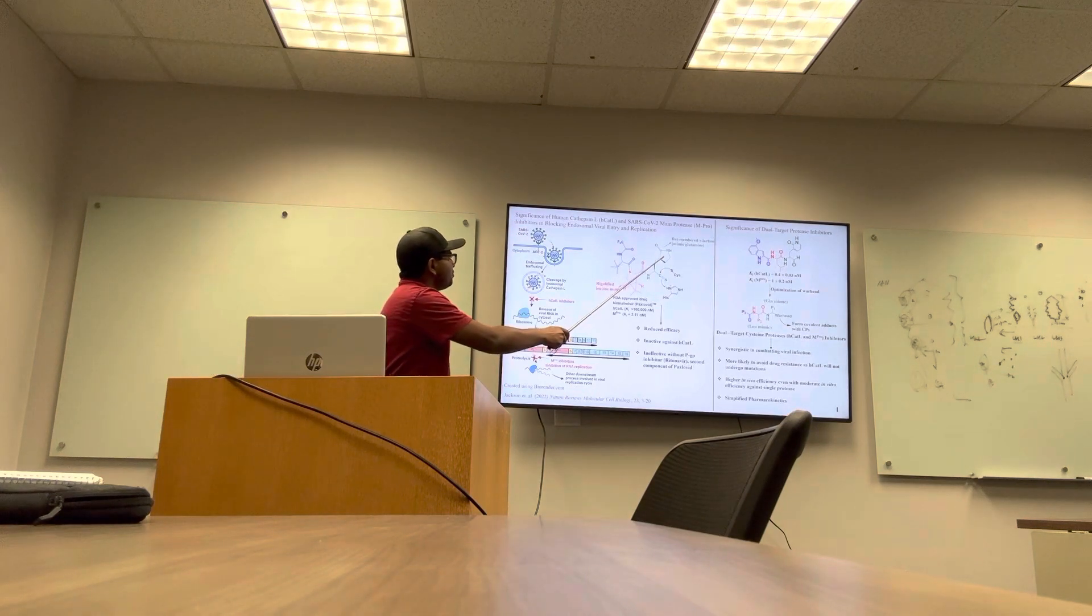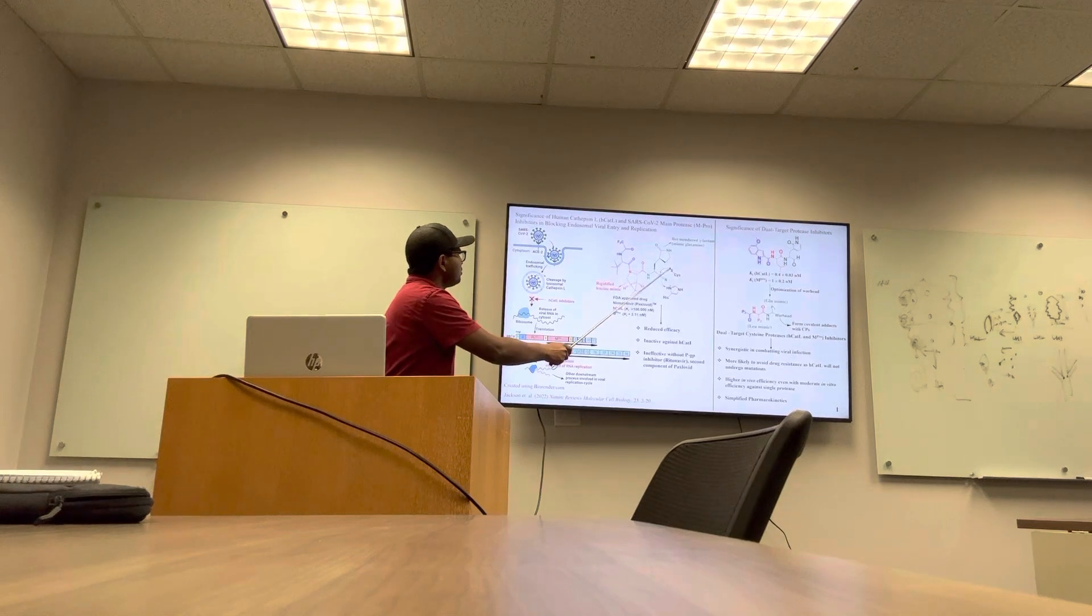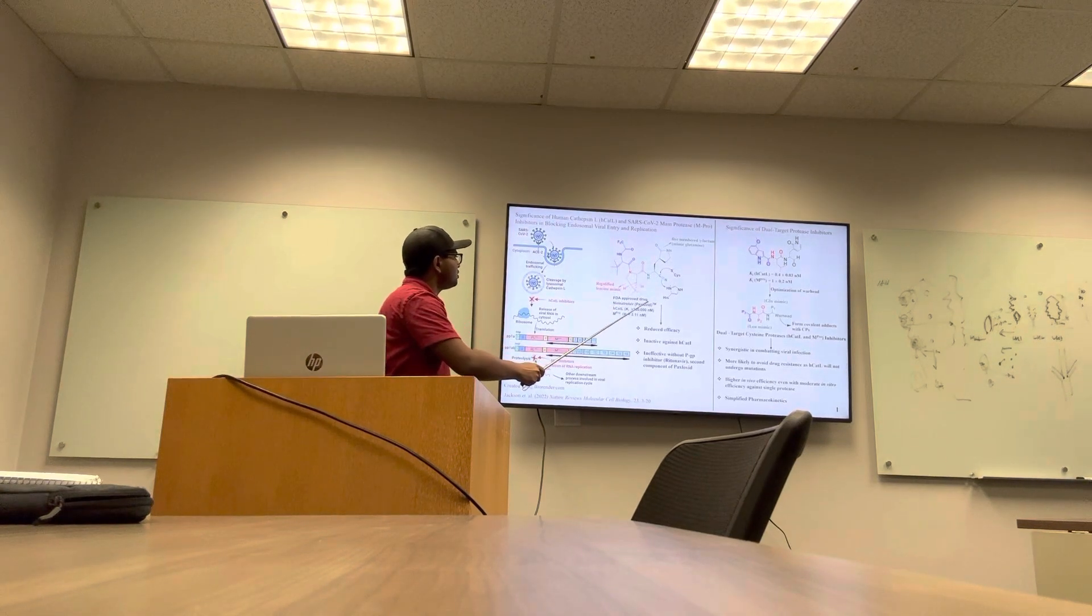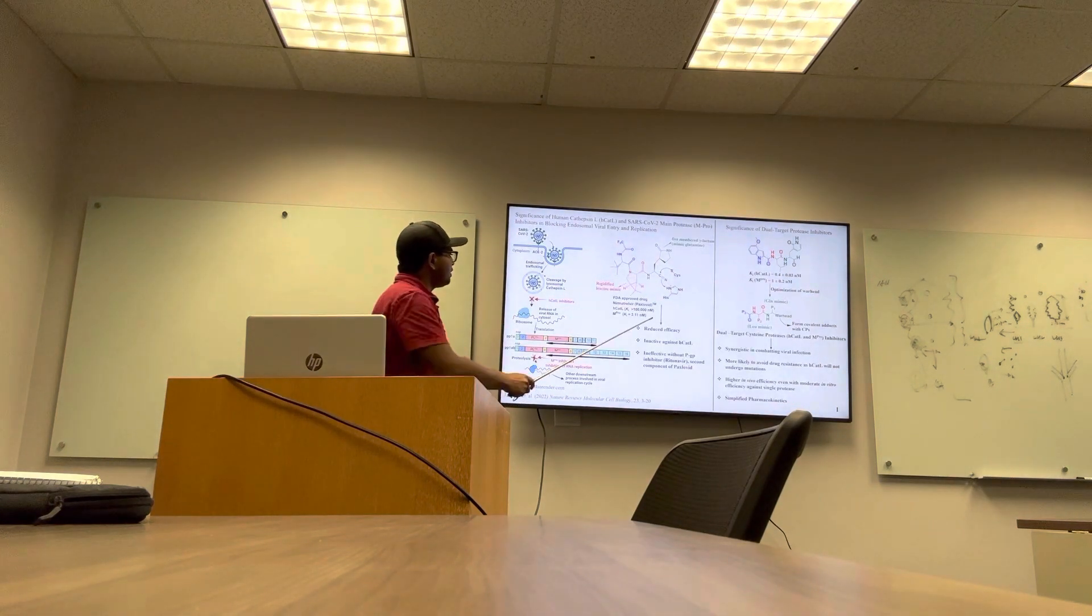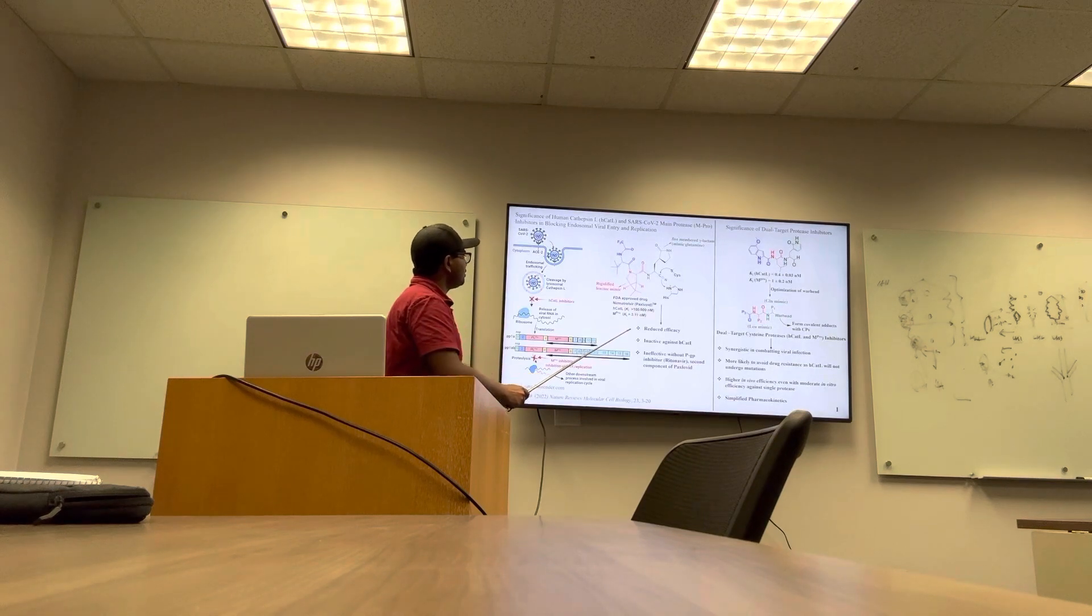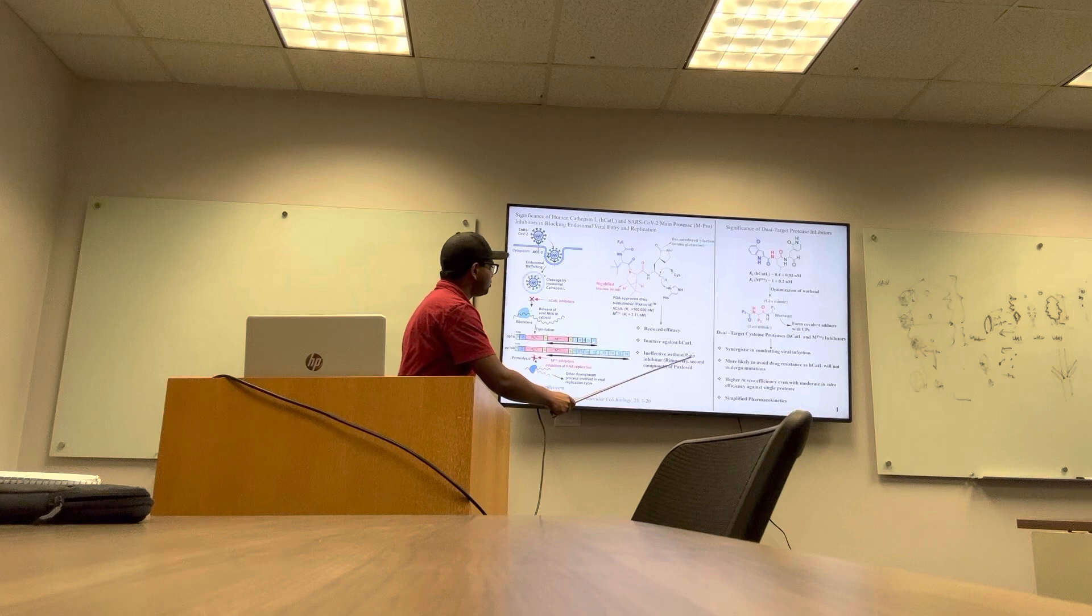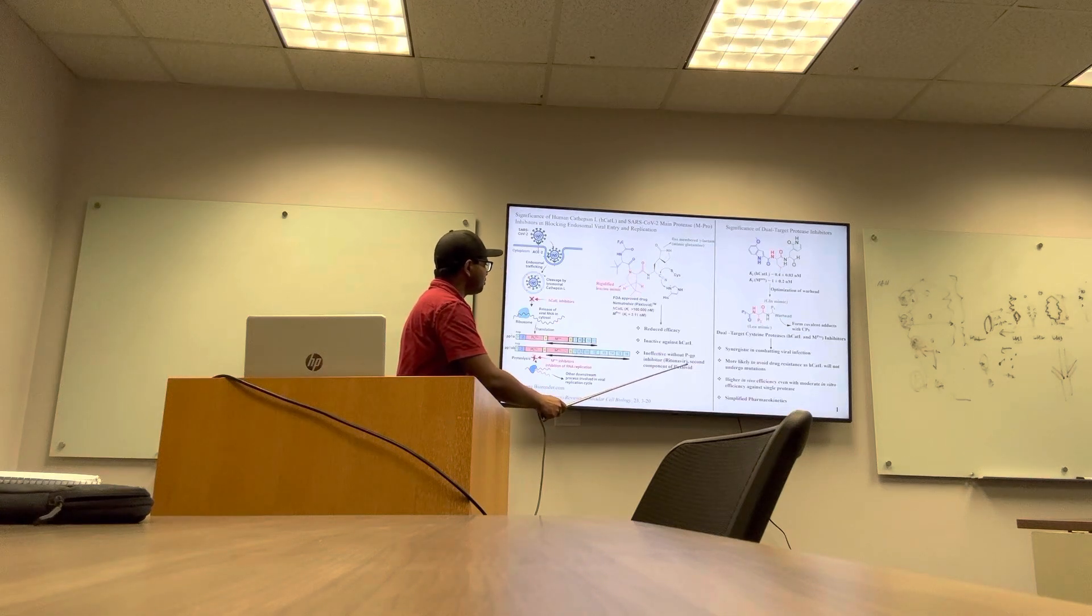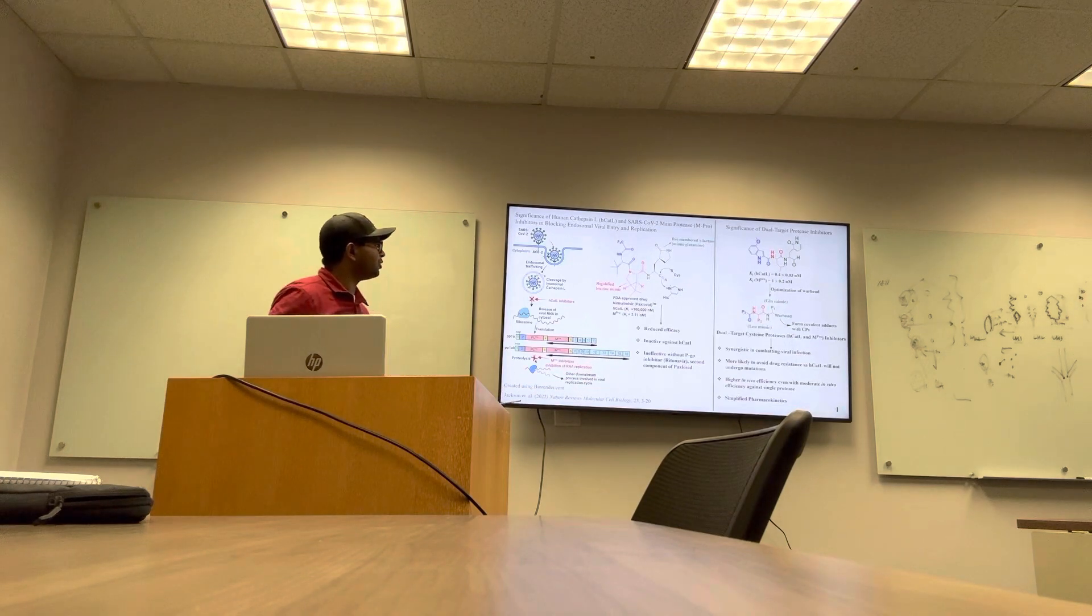The efficacy of current FDA-approved drug Nirmatrelvir, which is a reversible covalent inhibitor of main protease, is reduced with the arrival of new mutations, with further mutations expected to diminish its potency even more. It is inactive against H-cathepsin and ineffective without the support of PGP inhibitor Ritonavir, which is the second active component of Paxlovid given to increase the plasma life of Nirmatrelvir.